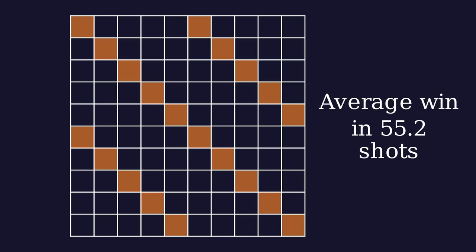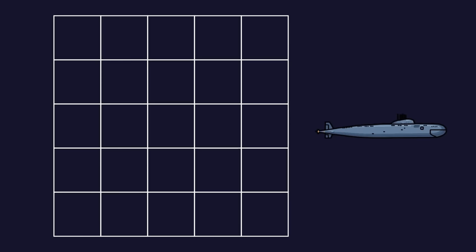But we can create an even better strategy using probability. To make it simpler, let's look at a 5x5 grid first. We know that there is a 3 square long submarine somewhere here. And these squares are empty. We want to figure out where to shoot next to have the best chance of hitting it.